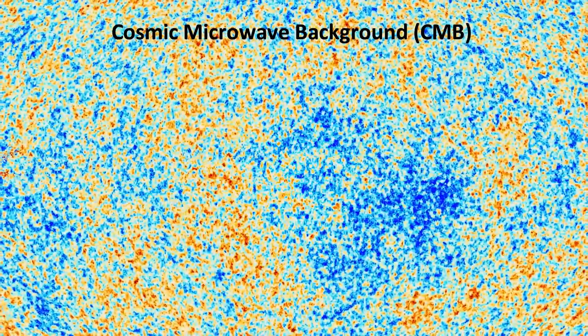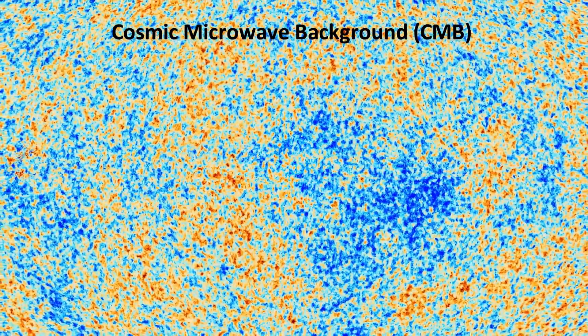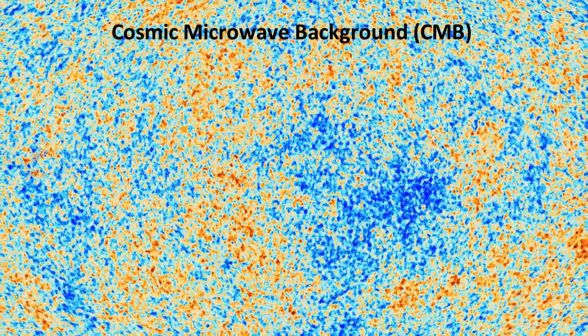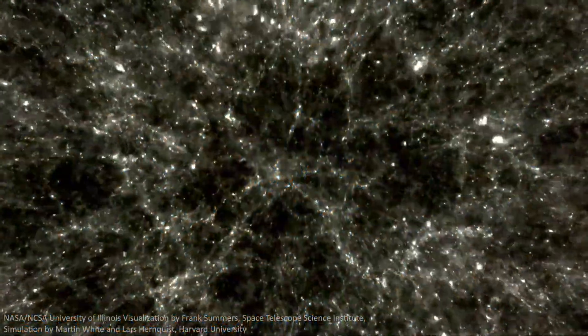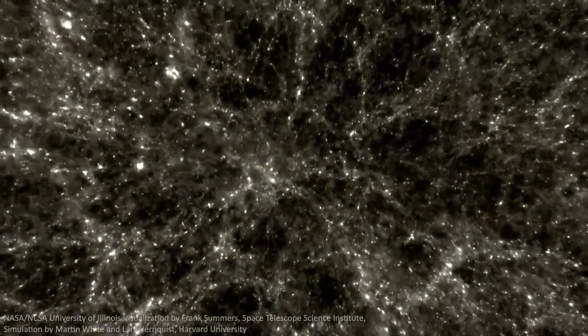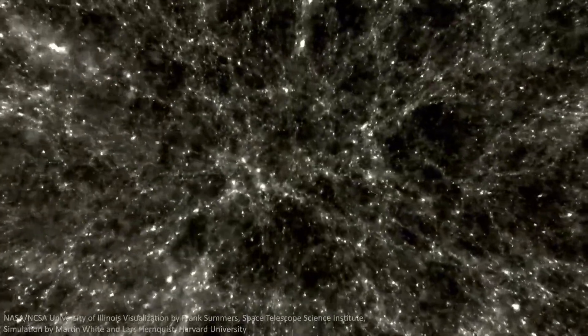This transition was crucial for the universe's development. It set the stage for the cosmic microwave background, CMB, the afterglow of the Big Bang that we can still observe today. It's fascinating to think that these ancient photons have been traveling through space for billions of years, carrying the secrets of the universe's infancy.